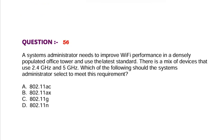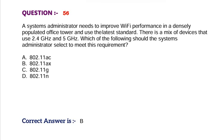Question: A systems administrator needs to improve Wi-Fi performance in a densely populated office tower and use the latest standard. There is a mix of devices that use 2.4 GHz and 5 GHz. Which of the following should the systems administrator select to meet this requirement? Option A, 802.11ac. Option B, 802.11ax. Option C, 802.11g. Option D, 802.11n. Correct answer is Option B.